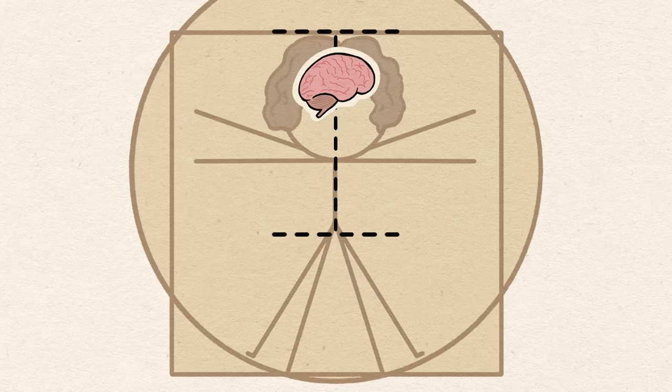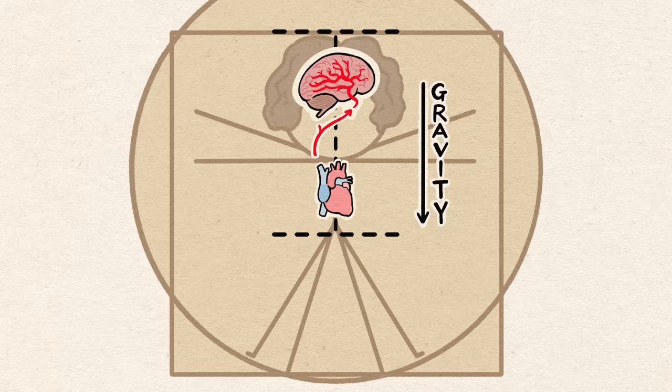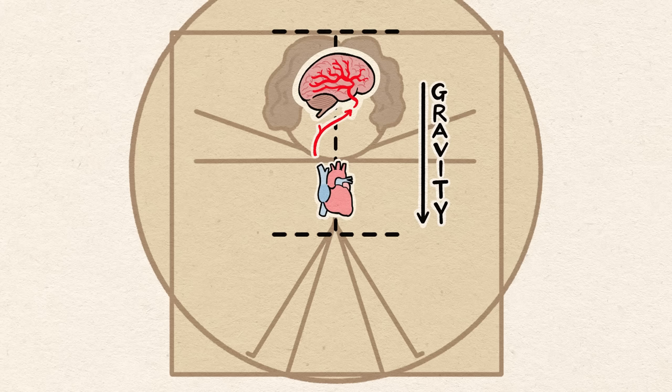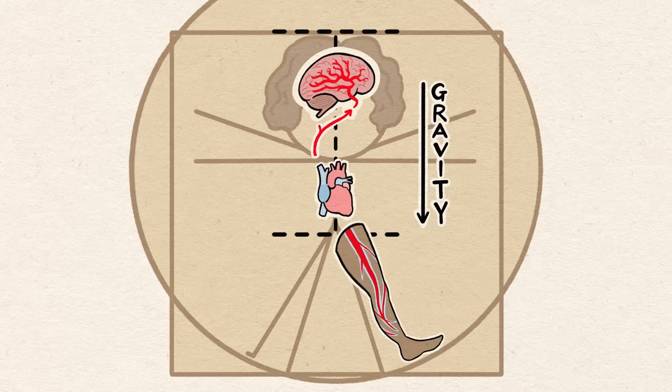Spending most of our time upright, with our brain above our heart, means our blood has to fight gravity to reach the brain. And on top of that, or rather below, we have big veiny legs, which, when we stand still for too long, collect lots of blood, making it even harder to supply our brains with enough blood.